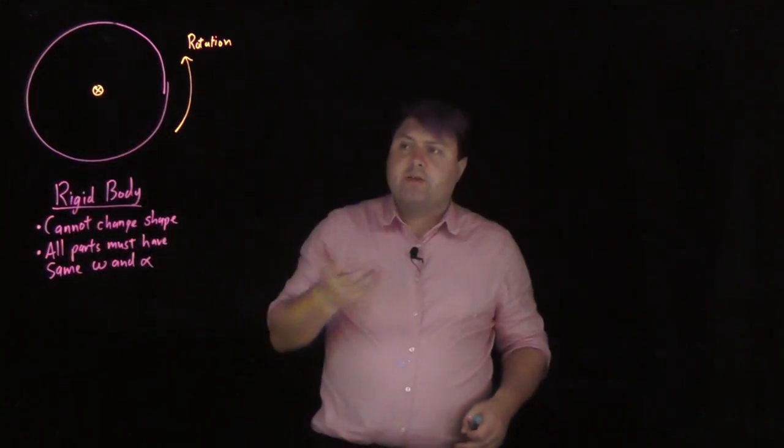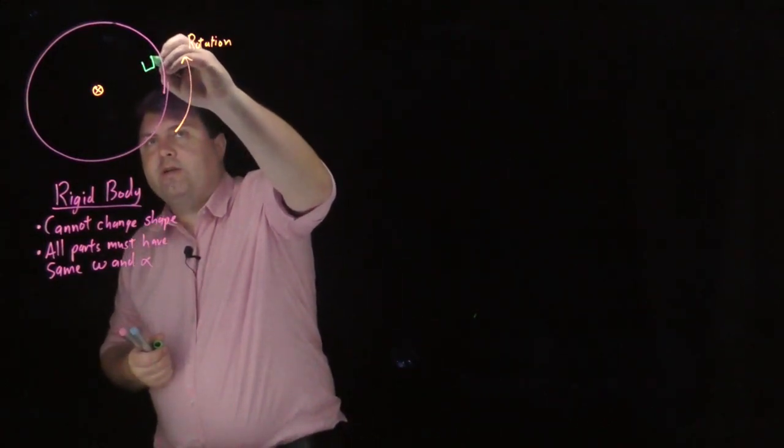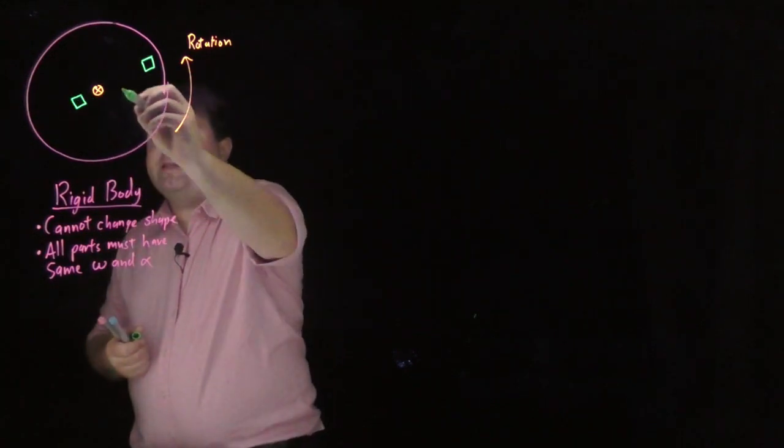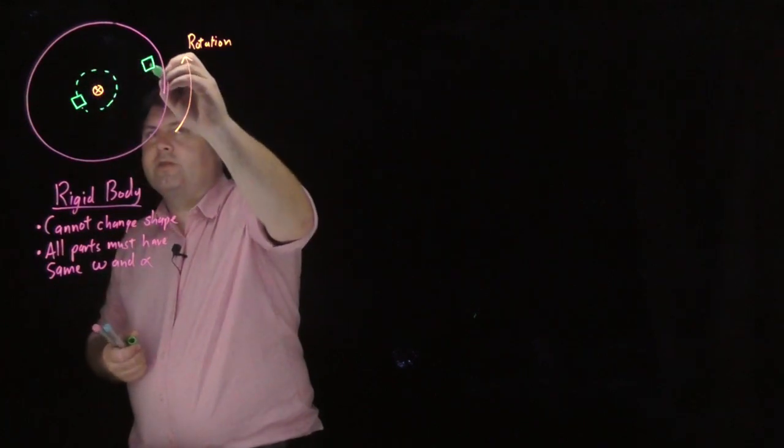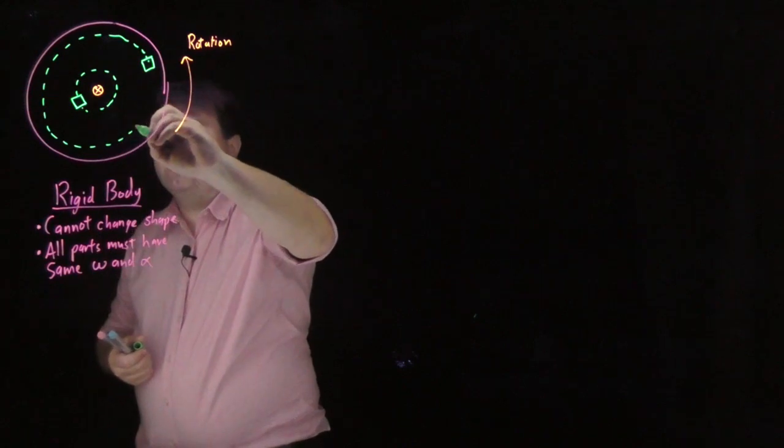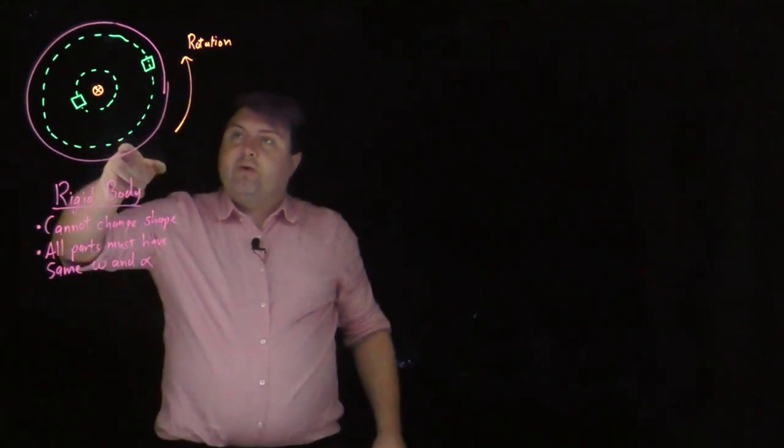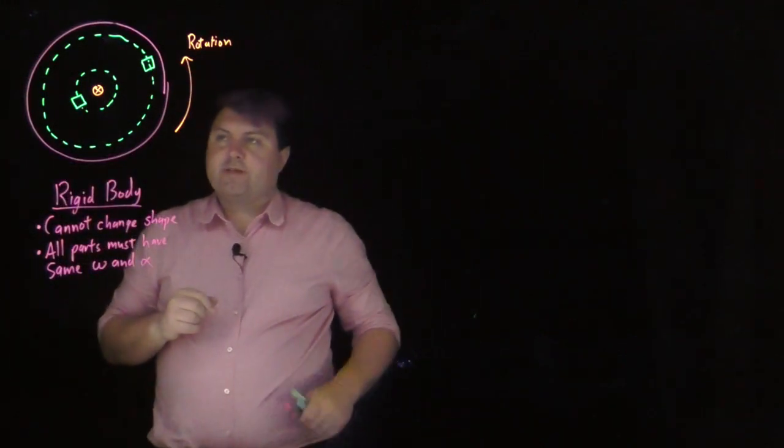It's a very good model that applies to a lot of solids. What this means is that if I have a piece here, and if I have a different piece here, as this rotates around, it's going to go in this circular fashion. This one is going to go around in a slightly larger circular fashion. And as they both rotate, they have to have the same angular acceleration and the same angular velocity.